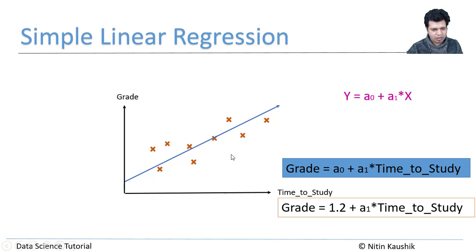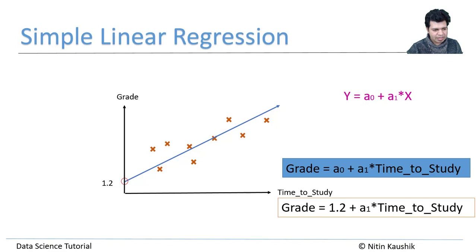We put a line to this chart that actually best fits the data. We have observations and a straight line which best fits them. a-naught is the constant, represented here by the value 1.2, and it is the point where this best fit line crosses the vertical axis — that crossing point is our constant.